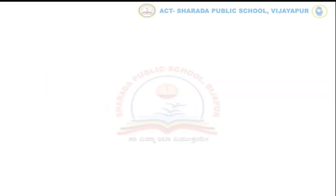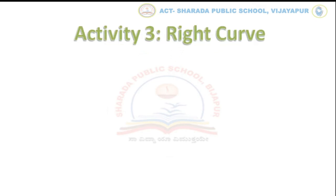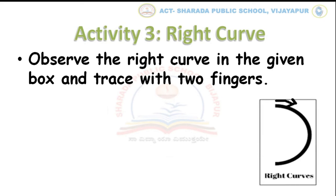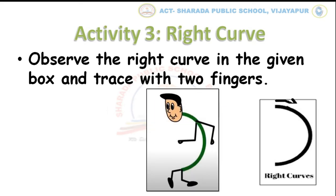Now let us do our third activity, that is right curve. Children, let us observe the given picture of right curve. For tracing, use two fingers — that is index and middle fingers — and start tracing from top to bottom. Slightly trace it down to the right side. Now tell me, this is right curve. This curve is looking backward, so it is right or backward curve.